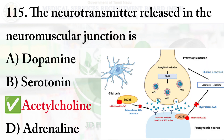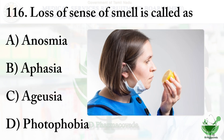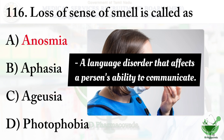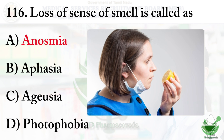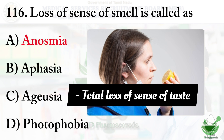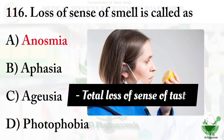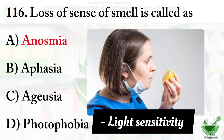Question 116: Loss of sense of smell is called — Option A: anosmia, option B: aphasia, option C: agusia, option D: photophobia. The right option is option A, anosmia. Aphasia means a language disorder that affects a person's ability to communicate. Agusia means a total loss of sense of taste, and photophobia means light sensitivity — discomfort in bright light.